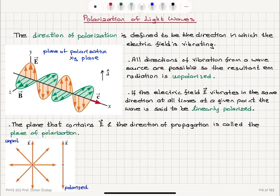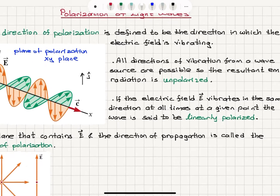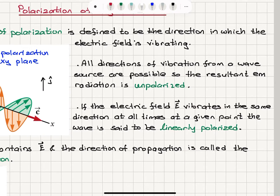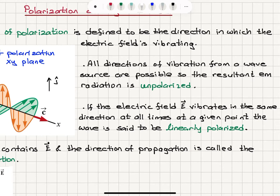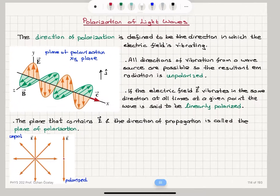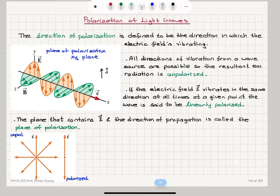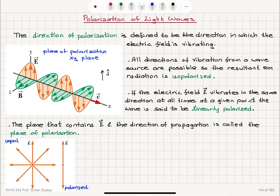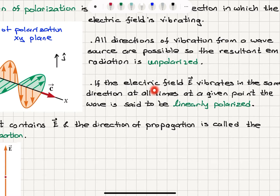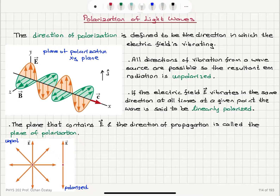If all directions of vibration from a wave source are possible, the electric field component can be in any direction, and the resultant electromagnetic radiation is said to be unpolarized. If the electric field can oscillate in any direction including the out-of-plane direction, we have an unpolarized electromagnetic wave. On the other hand, if the electric field vibrates in the same direction at all times at a given point, the wave is said to be linearly polarized. This is an example of a linearly polarized wave.